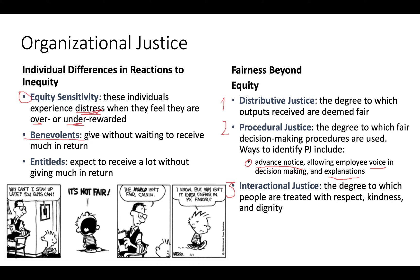There are two ends of the equity sensitivity spectrum. Benevolents give, give, give and don't expect much in return — like Bob, who stays late, rearranges conference chairs, helps a friend meet a deadline, and really isn't expecting much back. He's doing this freely for the organization. At the opposite end are entitled people, who expect to receive quite a bit without giving much in return — like Joe, who leaves five minutes early while still collecting a paycheck, wanting to receive a lot without providing much.